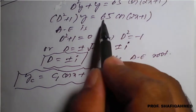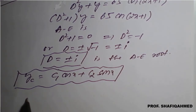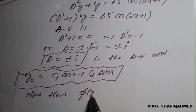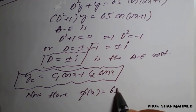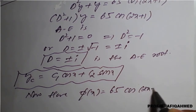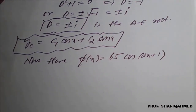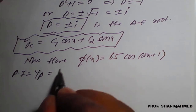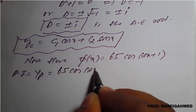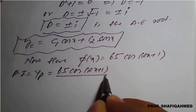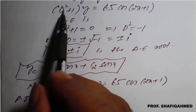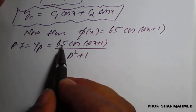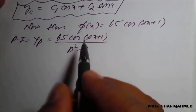By using the right-hand side, we can go for the particular integration. The value of φ(x) is 65·cos(2x + 1). Therefore, yp is given by: yp = 65·cos(2x + 1) divided by (D² + 1). We keep 65 outside and go for simplification.